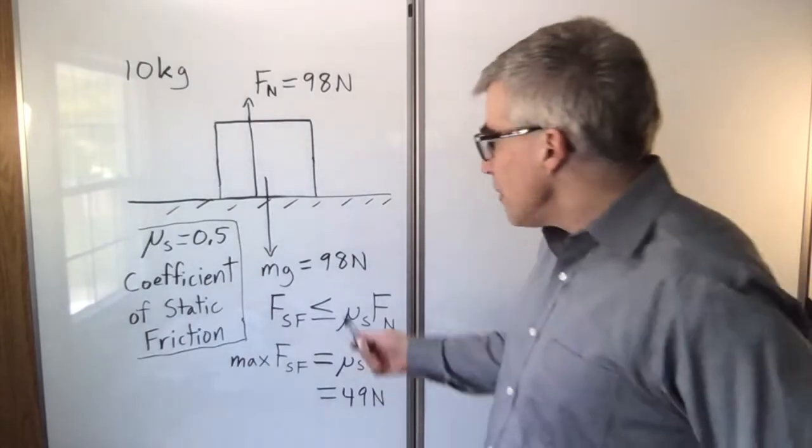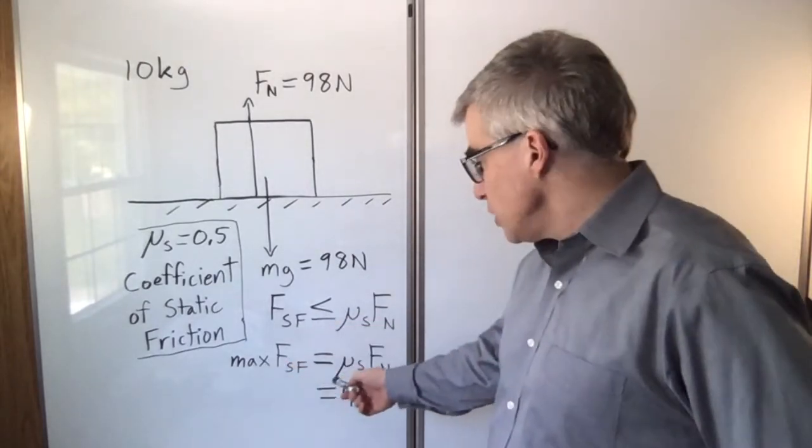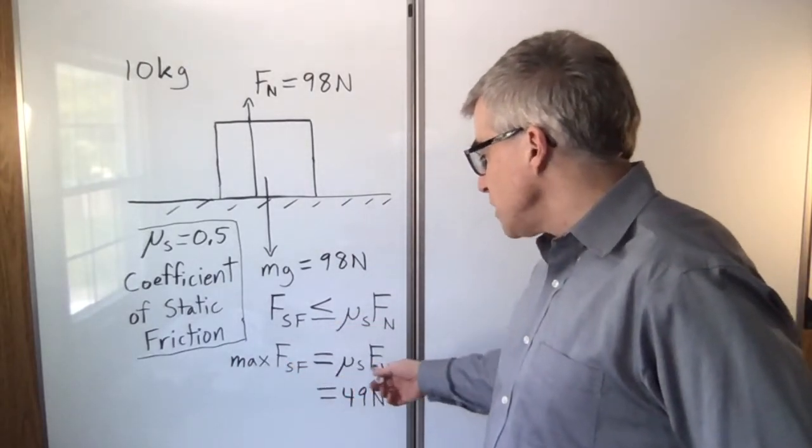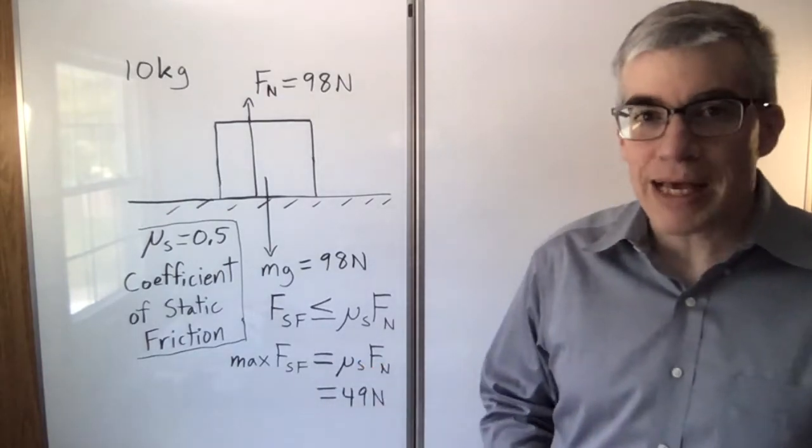What does that mean? It means the maximum force of static friction is going to be equal to mu static times FN, which is going to be 49 newtons.